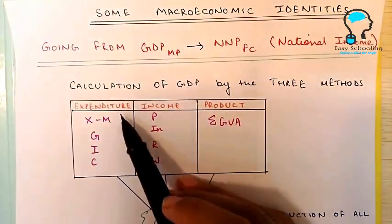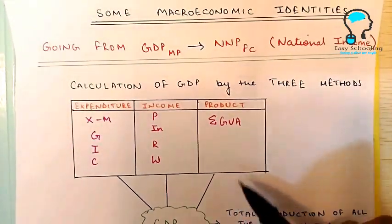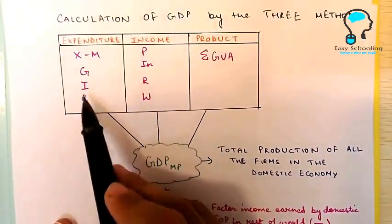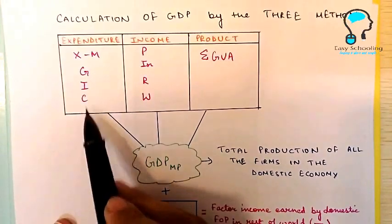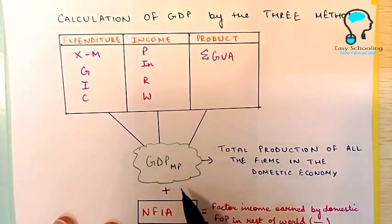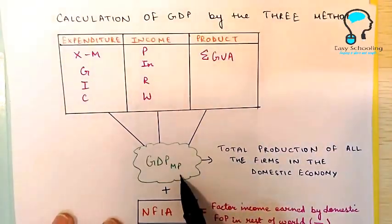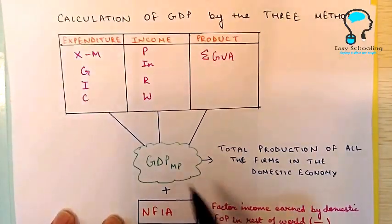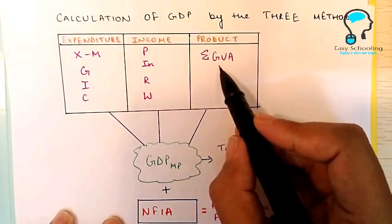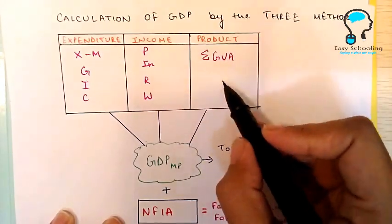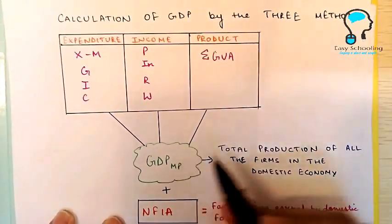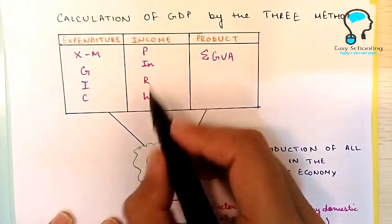Those three methods are expenditure method, income method, and product method. When you add these four components in the expenditure method you will get the GDPMP of the economy. And if you do the summation of gross value added of all the firms, that will also give you the GDPMP.